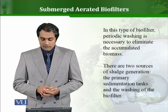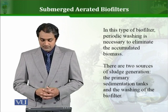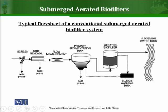Sludge generation is of two types: one is the sludge removed during washing of the biofilter, and the second is the sludge from the primary sedimentation tank. This is a typical flow sheet of a conventional submerged aerated biofilter system. You can see the first phase removes solids from the wastewater, then we have a primary sedimentation tank, then the aerated biofilter where the filter is always submerged. The influent direction is shown, sludge is removed and recirculated to stabilize BOD and achieve high efficiency.